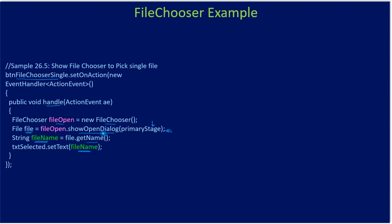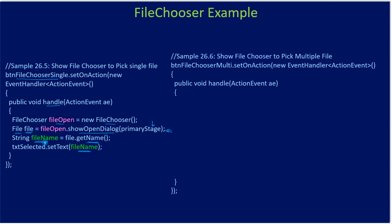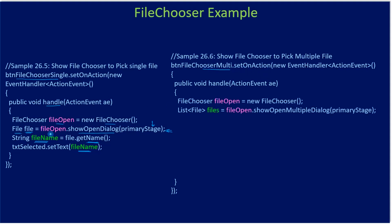So showOpenDialog gives us the file once the user closes it, then we call getName() and set it to our text box. For the multiple file button, we call showOpenMultipleDialog instead — everything else is the same FileChooser instance — but it returns a List of files rather than a single file.